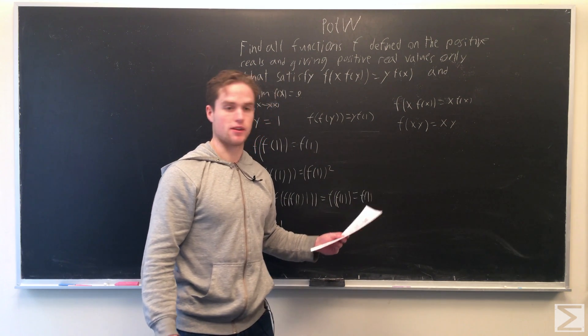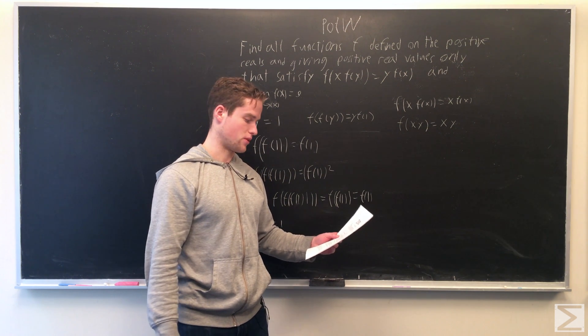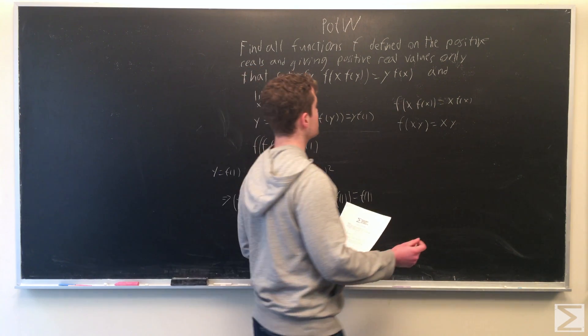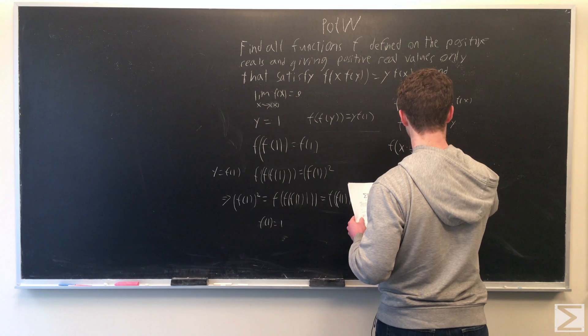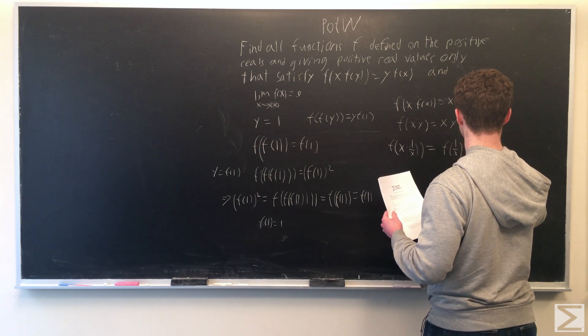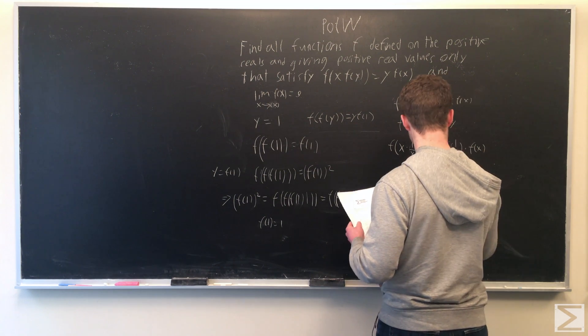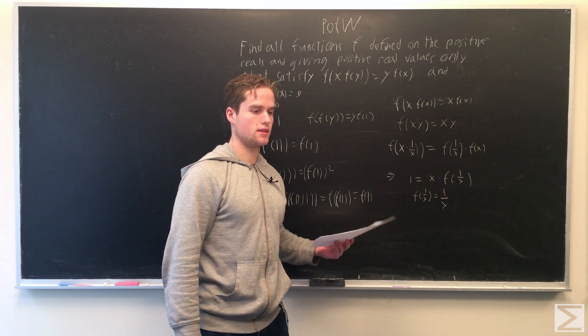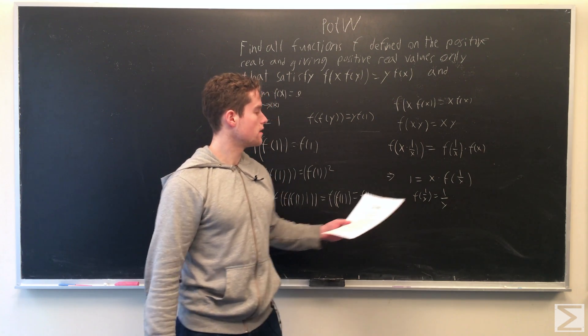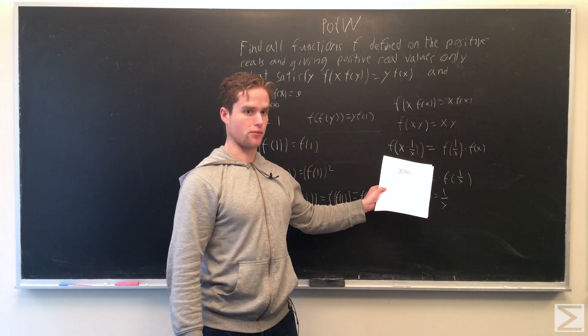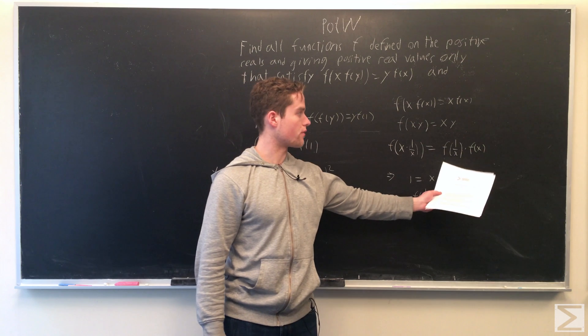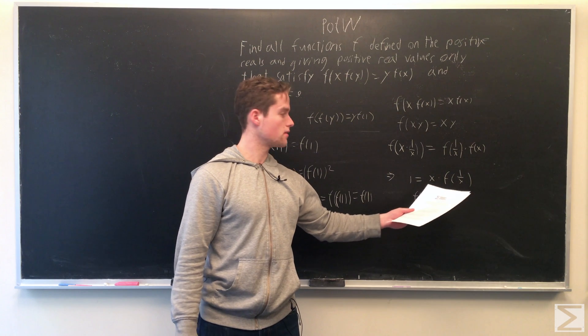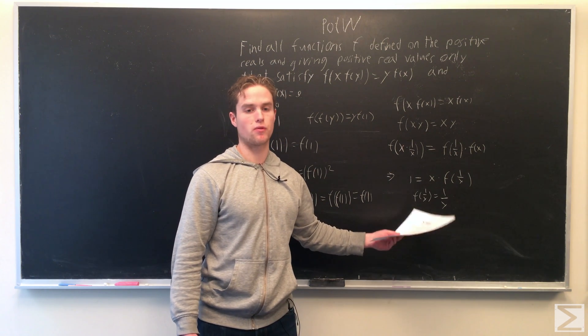Similarly, we can't have fixed points less than 1. Plugging in f(y) = 1/x, which also implies y = f(1/x), this becomes f(1/x)·f(x) = 1. But assuming x is a fixed point, we can say 1/x = f(1/x), so 1/x is also a fixed point.